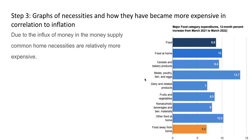Step three: graphs on necessities and how they became more expensive in correlation to inflation. Due to the influx of money in the money supply, common home necessities are relatively more expensive. Here we have a chart depicting the major food category expenditures — the 12-month percent increase from March 2021 to March 2022. In the food at home section there's a 10 percent increase, which is relatively higher than food away from home. It is typically known that it is cheaper to make your food at home rather than buying fast food or restaurants, so this shows how inflation has affected food prices.